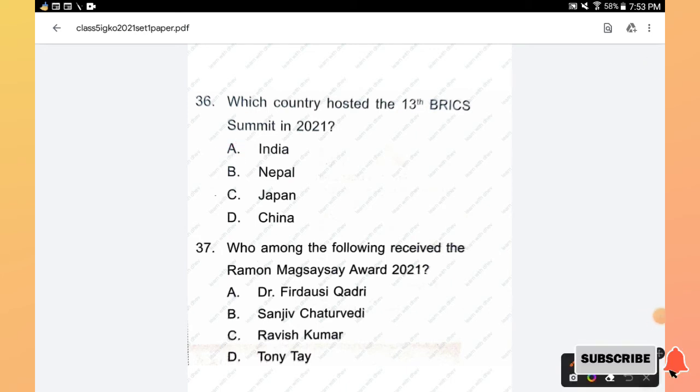Question number 37: Who among the following received the Ramon Magsaysay Award 2021? Options are Dr. Firdausi Qadri, Sanjeev Chaturvedi, Ravish Kumar, Tony Tai. The right answer is option A, Dr. Firdausi Qadri.